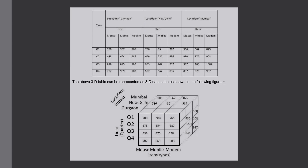As you can see in this table, we have records with respect to time, item types, and location. This is a 3D data cube which will be more beneficial for analysis. This table can be represented as a 3D data cube, as shown here — with time, items such as mouse, mobile, and modem, and all the locations. This is the 3D data cube representation of the above three-dimension table.